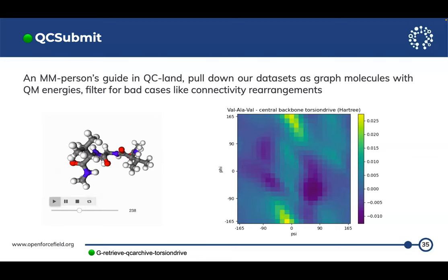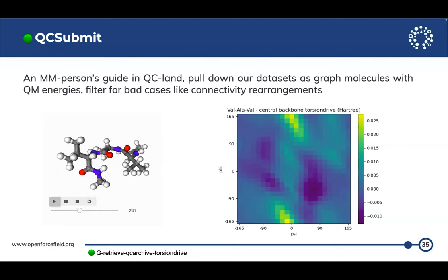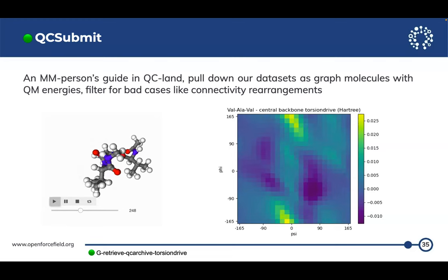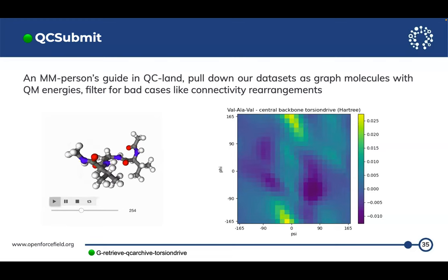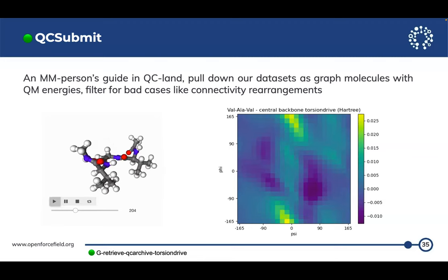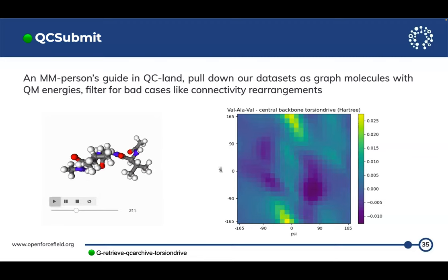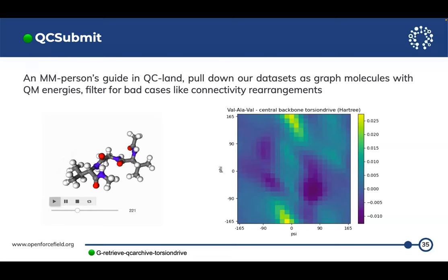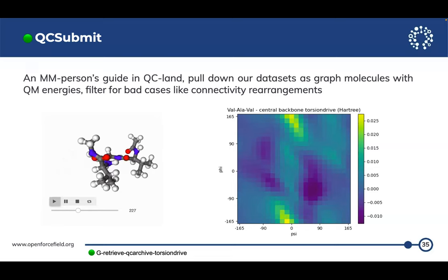Here for example is one of the torsion drives from our protein fitting project — which you'll hear about after the break — for valine-alanine. This is a 2D torsion drive with a huge number of points, but in the end you get this nice energy plot (in Hartrees, because I didn't have time to convert).